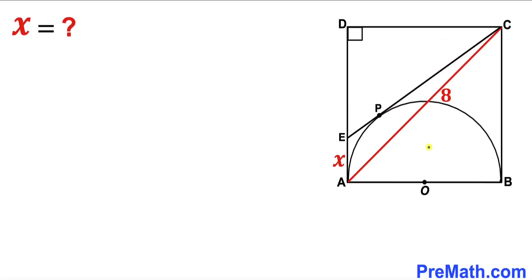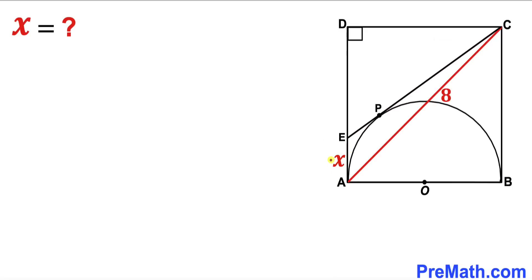Welcome to pre-math. In this video we have a semicircle fully inscribed in a square ABCD, where the center of the semicircle is O and AC is the diagonal of the square. The length of diagonal AC is 8 units. Line segment EC is tangent to the semicircle at point P, segment EA is represented by X, and our task is to find the value of X.